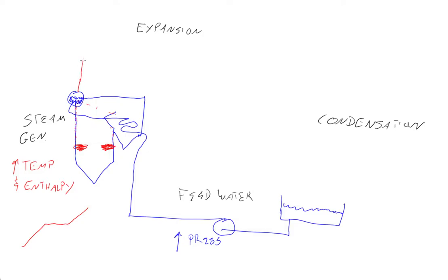So you come out of the drum, you have a control valve which determines how much steam goes into the turbine, and then you enter the turbine itself.